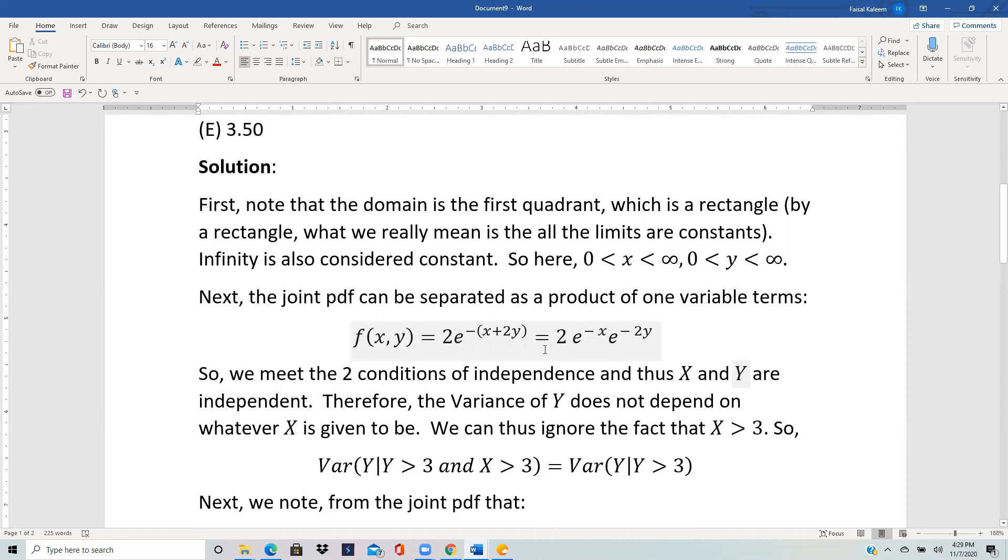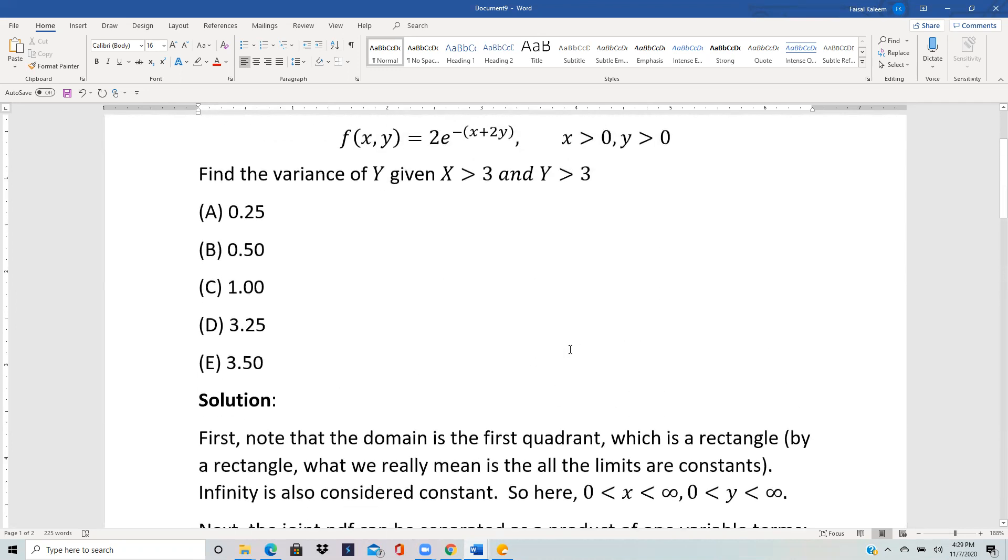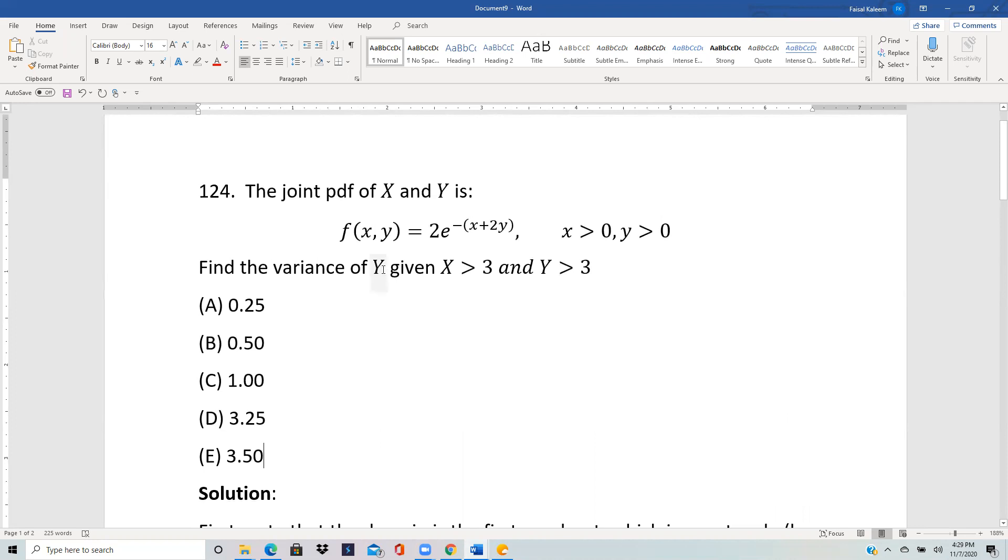So x and y are independent because both the conditions of independence are true. And the advantage of recognizing this is that now we can say that the variance of y does not depend on whatever x is given to be.